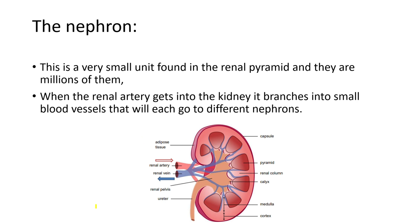Specifically in the kidney, the nephron is found in the renal pyramid. The renal pyramid is this pyramid-like structure here. This structure is found inside the kidney and contains the nephron. The nephron is the actual part that filters the blood in the kidney — it performs all the functions, which is why we call it the functional unit of the kidney. Nephrons are microscopic, extremely small.